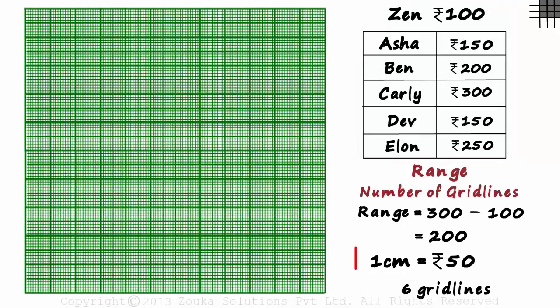Remember, the scale you have to choose should need a maximum of 8 grid lines. A graph paper generally has around 10 grid lines. Anything more than that will not fit into the graph paper.